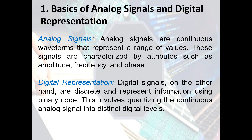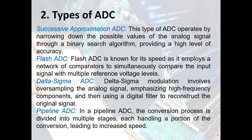Let's now discuss the basics of analog signals and digital representation. Analog signals are continuous waveforms that represent a range of values, characterized by attributes such as amplitude, frequency, and phase. Digital signals, on the other hand, are discrete and represent information using binary code. This involves quantizing the continuous analog signal into distinct digital levels — not just zero or one, but a range of values in between.